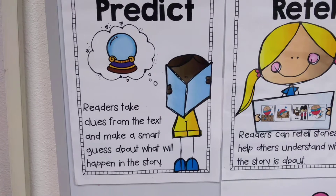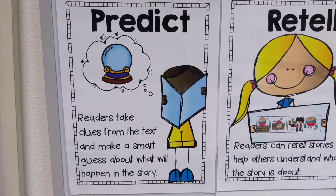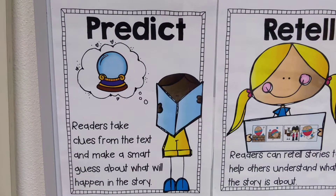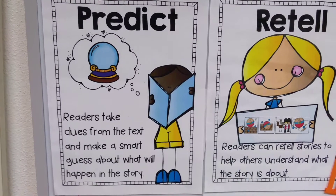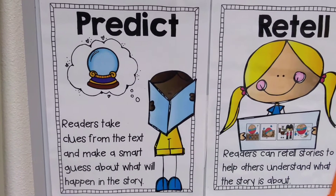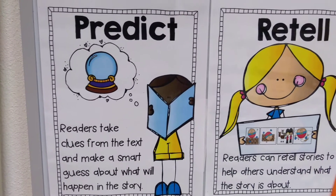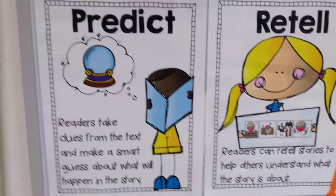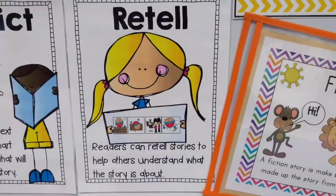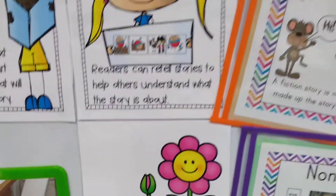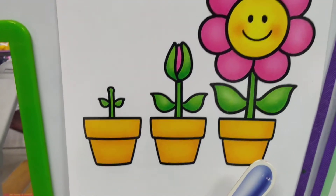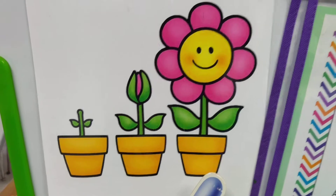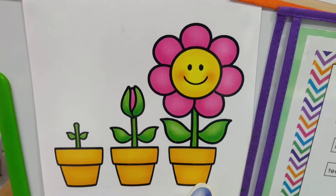Predictions. Make a prediction as you're reading in the text. Can you guess what happens next? Retell the story — we start at the beginning, then we tell the middle, then we tell the end.